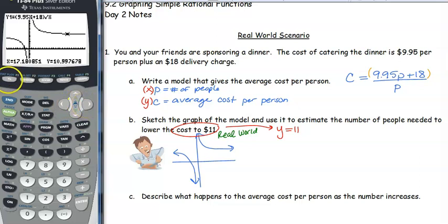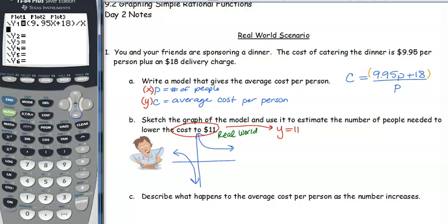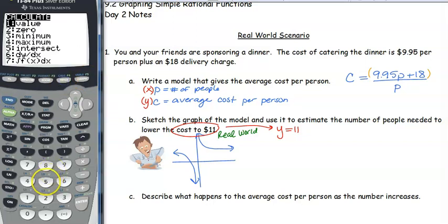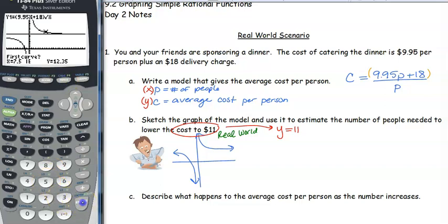Another better way to do this is go to Y equals. If we want our cost to be $11, we type $11 into Y2 because remember that's going to give us a horizontal line at $11. We graph, we go to 2nd trace, we want to find the intersection. First curve enter, second curve enter, guess.